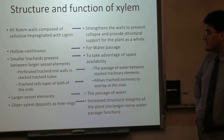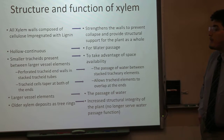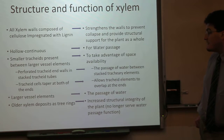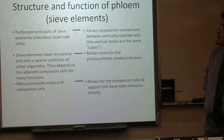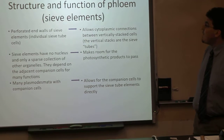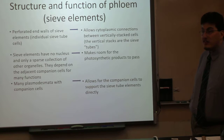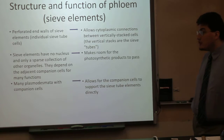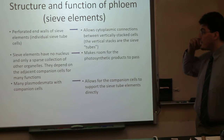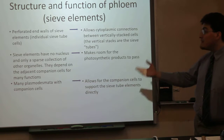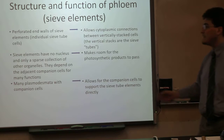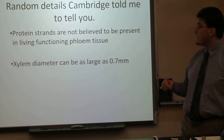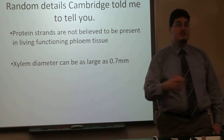Larger vessel elements allow for the passage of water. Older xylem deposited as tree rings increases the structural integrity of the plant, even though it no longer serves for water passage. In sieve tubes, perforated end walls of sieve elements allow for cytoplasmic connections between vertically stacked cells — these vertical stacks are the sieve tubes. Sieve elements have no nuclei and only a sparse collection of organelles; they depend on adjacent companion cells for their functions. Many plasmodesmata are shared between sieve tube elements and companion cells, allowing companion cells to support the sieve tube elements directly. Protein strands are not believed to be present in living, functioning, flowing tissue, and xylem diameter can be as large as 0.7 millimeters.